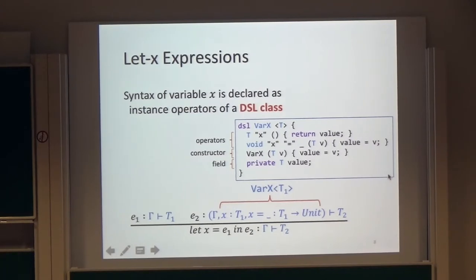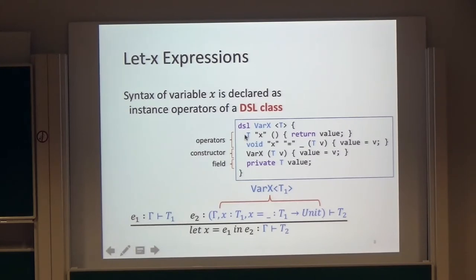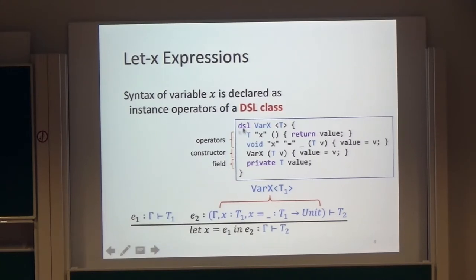Here is a definition of a DSL class Bar X. A DSL class consists of operators, constructors, and fields — it is similar to a class in Java. These are the definitions of getters and setters: this is a getter and this is a setter.